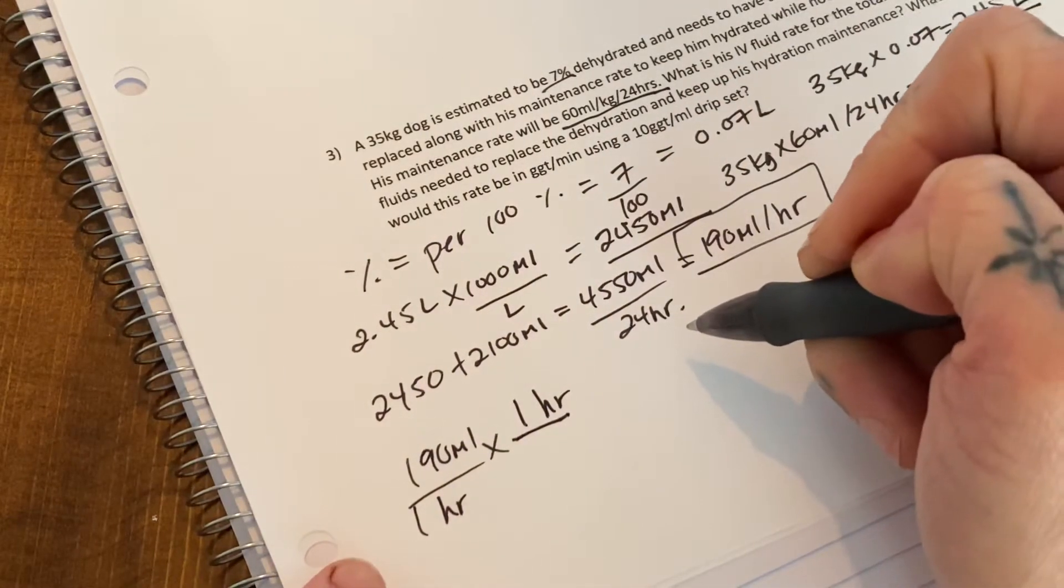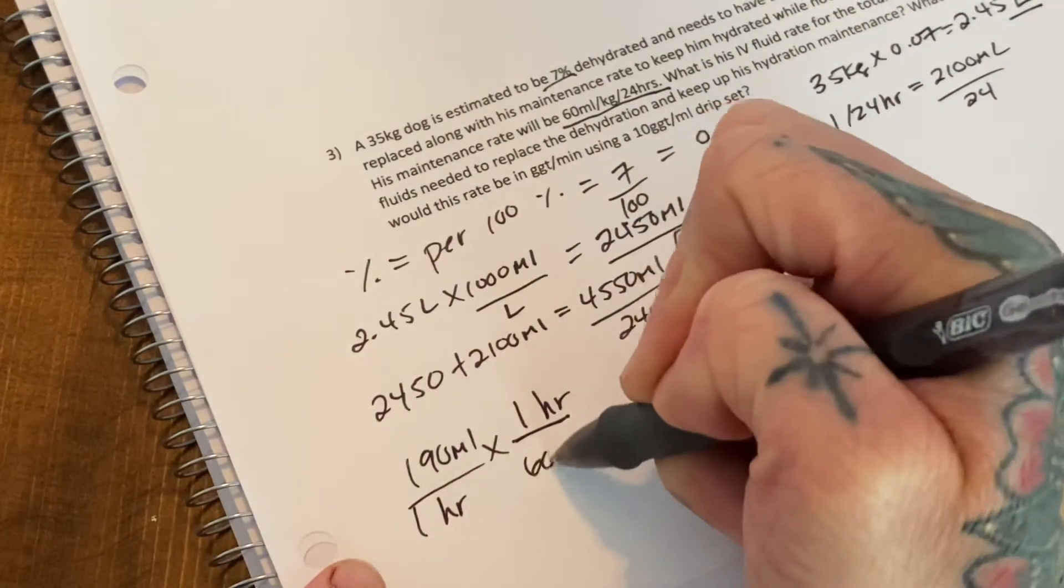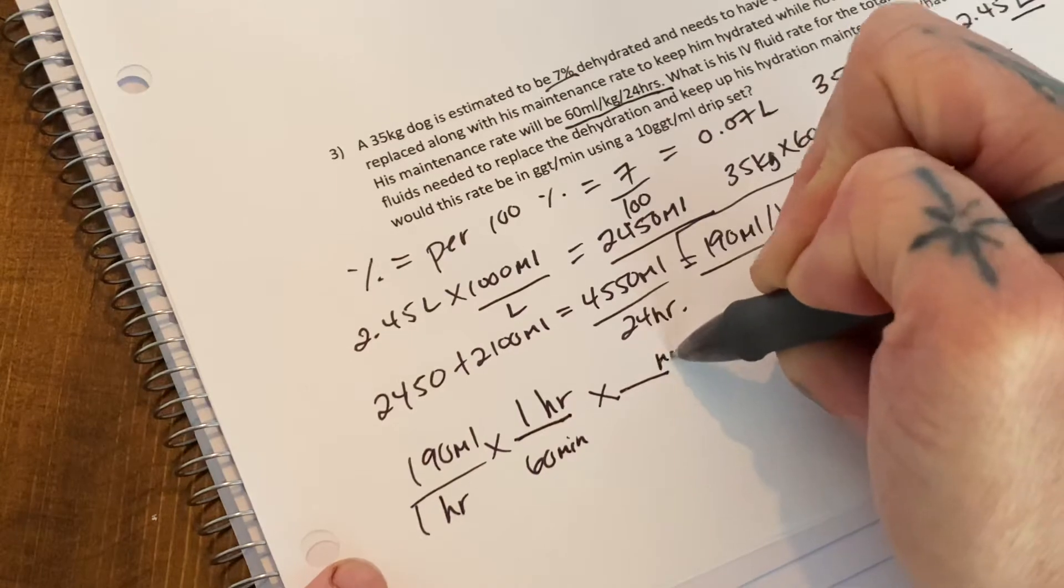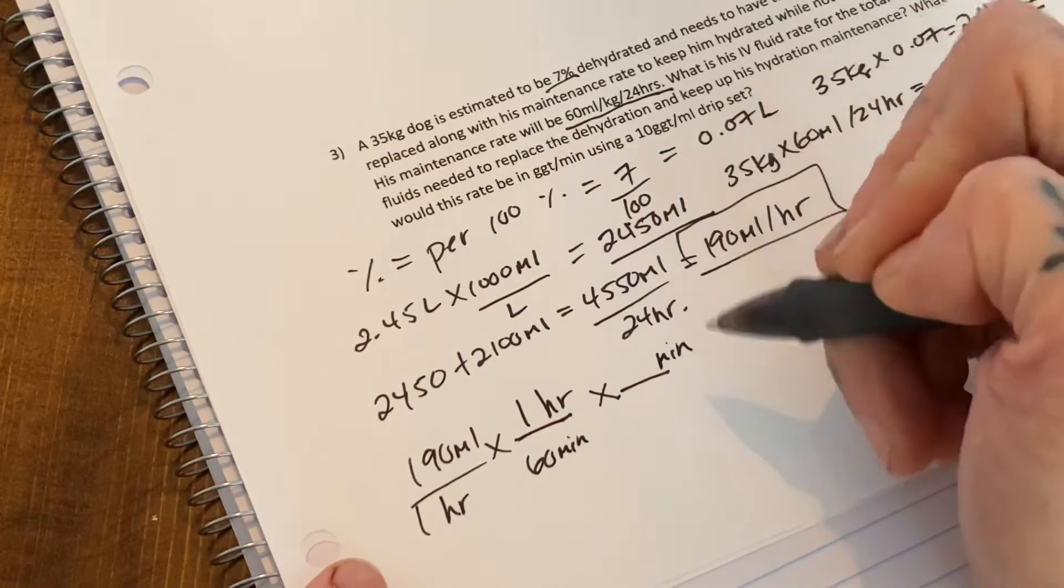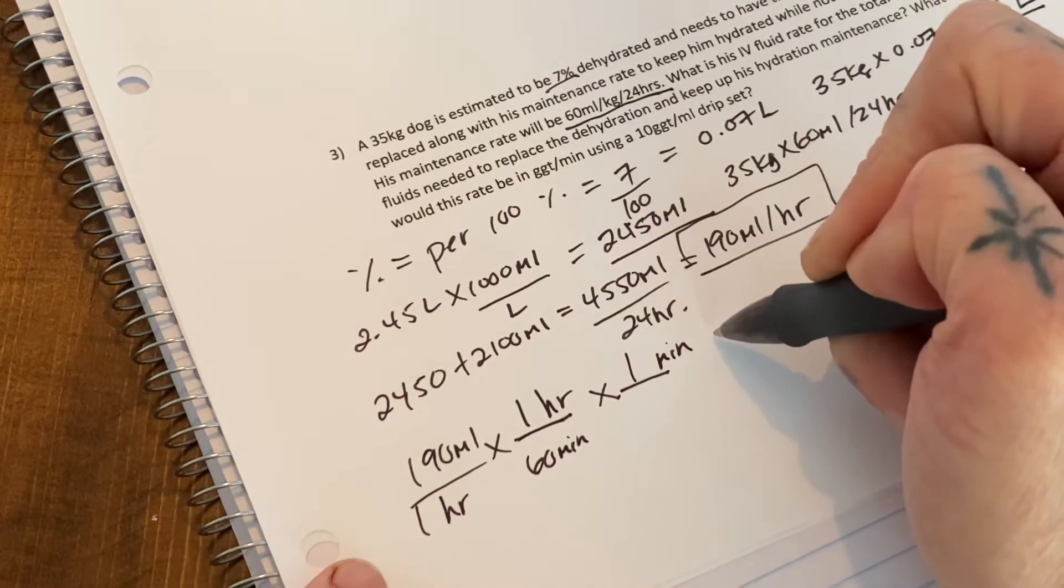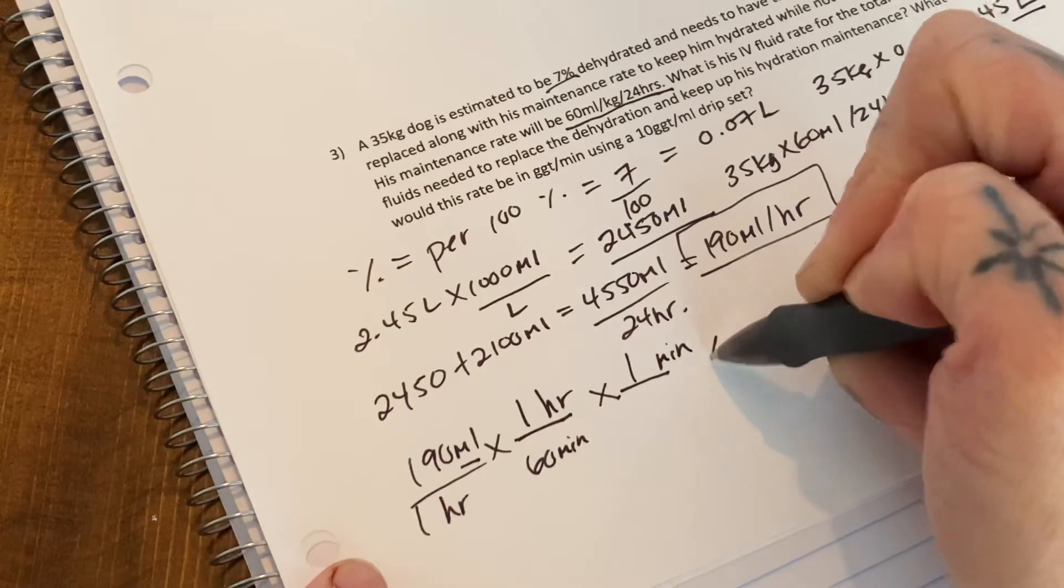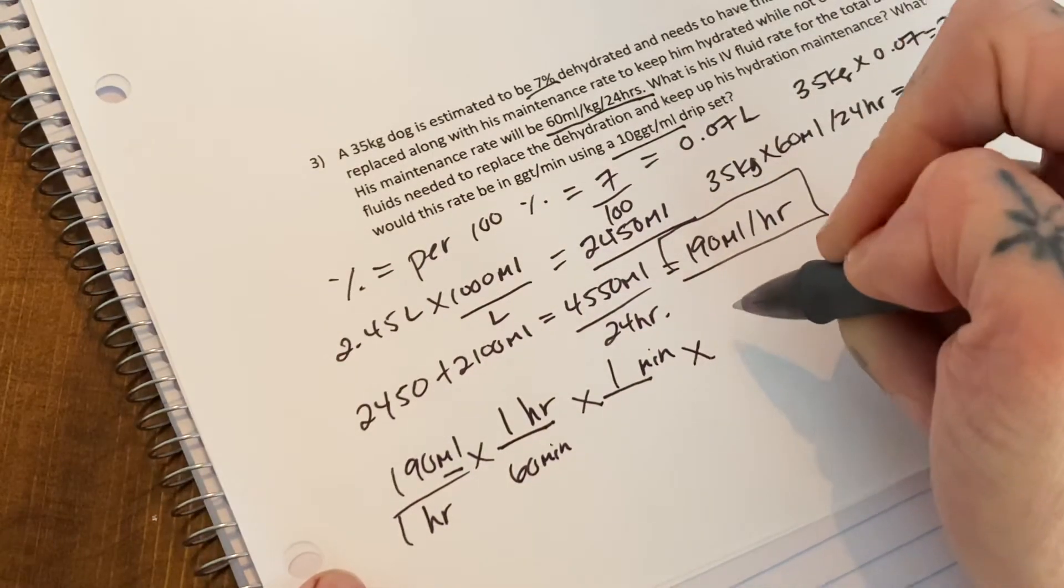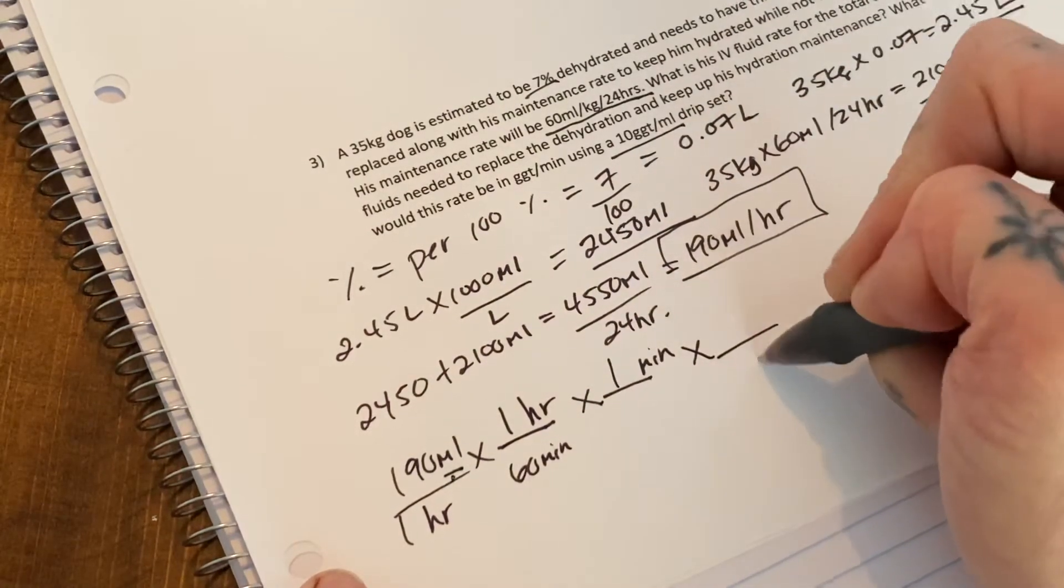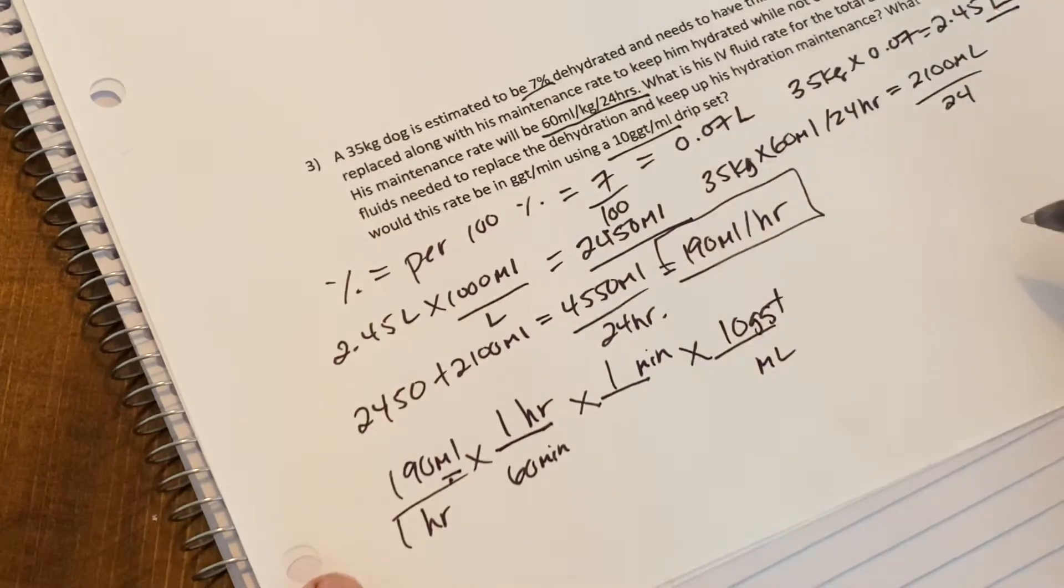Our goal is to get this into drips per minute, so there are 60 minutes in one hour. Times, now we need minute to be up here, we already have our one minute so we can leave this here. So the next one is going to be turning mils into drips. We know that we have a 10 drip per mil set, so again this is 10 drops per mil. Mil is up here, we know we want mil down here so that they're opposite each other, so logically the drip will have to go up here.